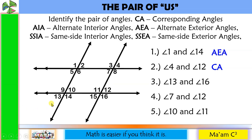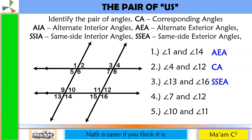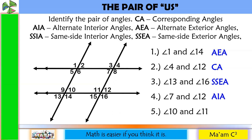Number 3: angle 13 and angle 16. Here is the transversal line. They are on the same side and they are both on the exterior. So we have same-side exterior angles. Next: angle 7 and angle 12. They are on the opposite side — so alternate — and both of them are on the interior. So alternate interior angles.